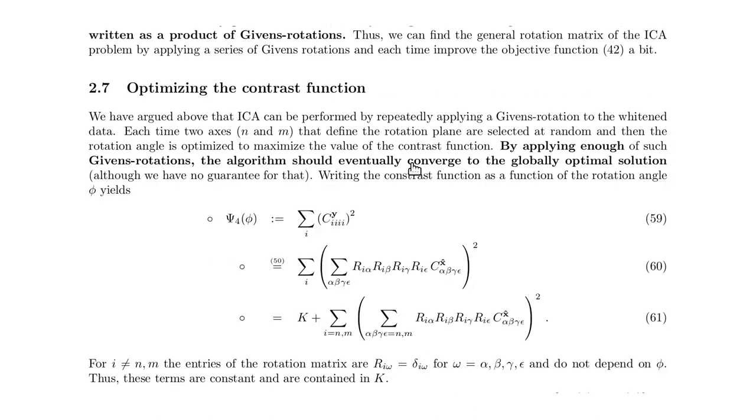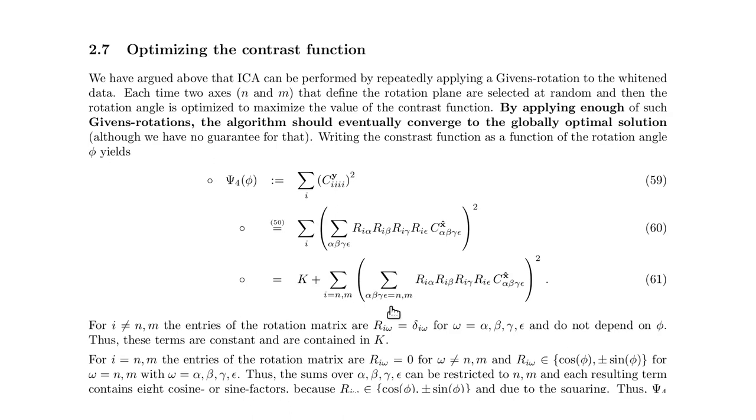So therefore, we can also restrict the second index to be n or m. These are now, so we have to calculate these constant terms once and here we only have to sum over two, four,